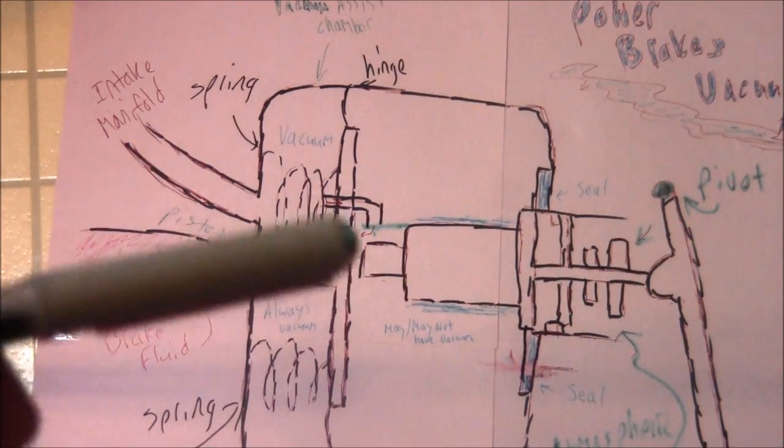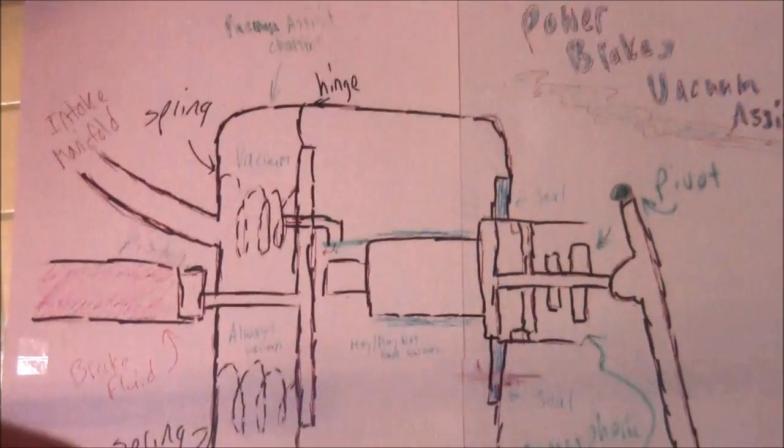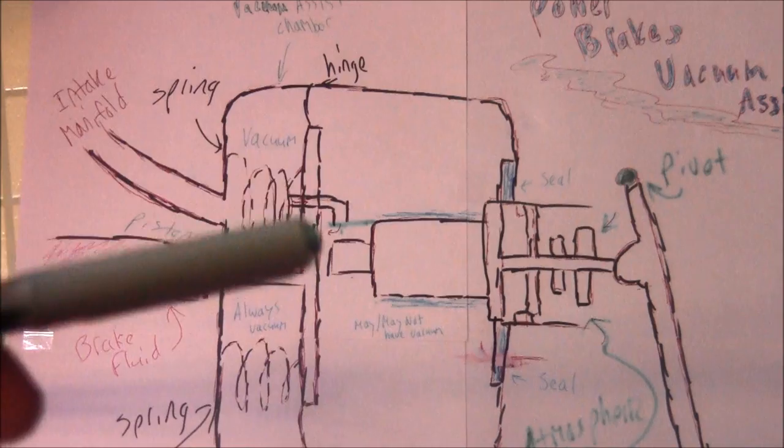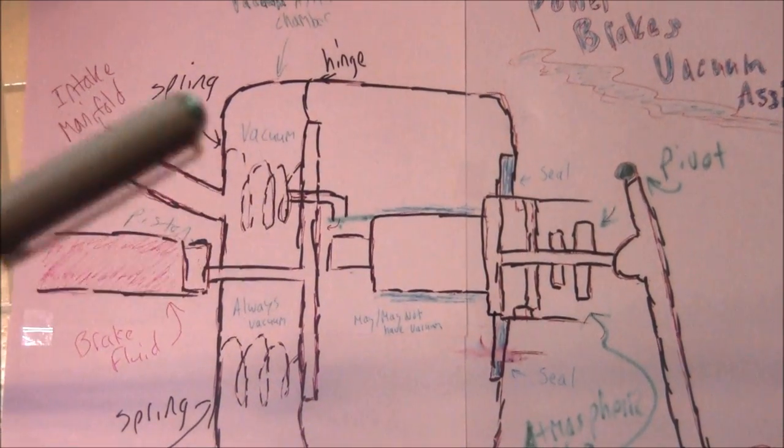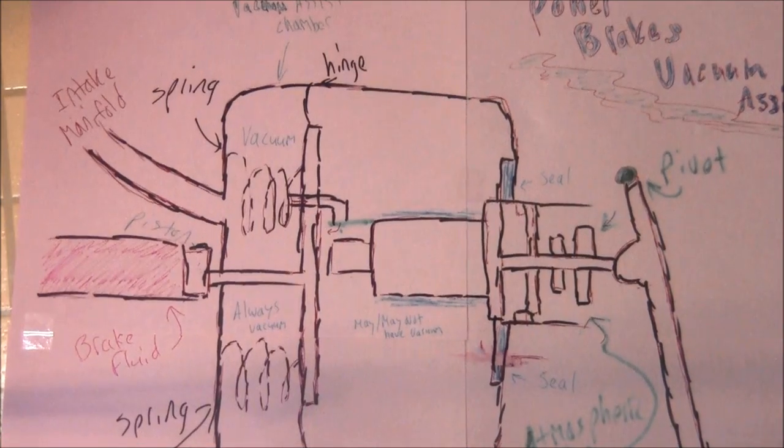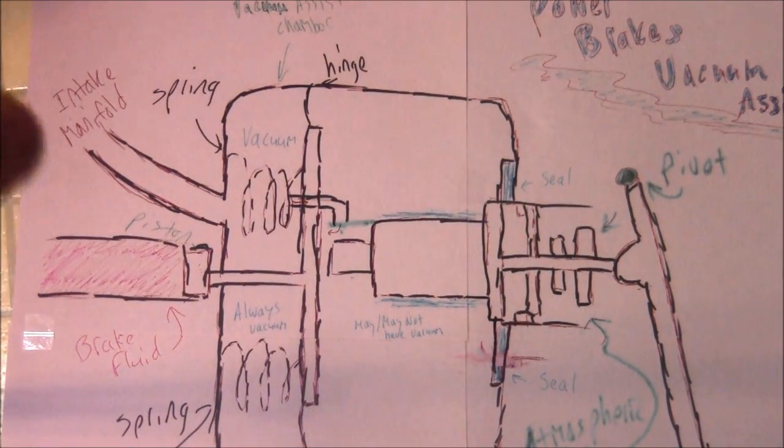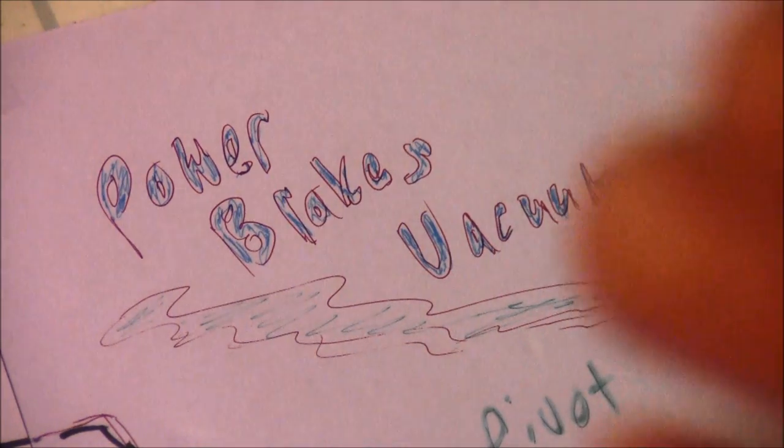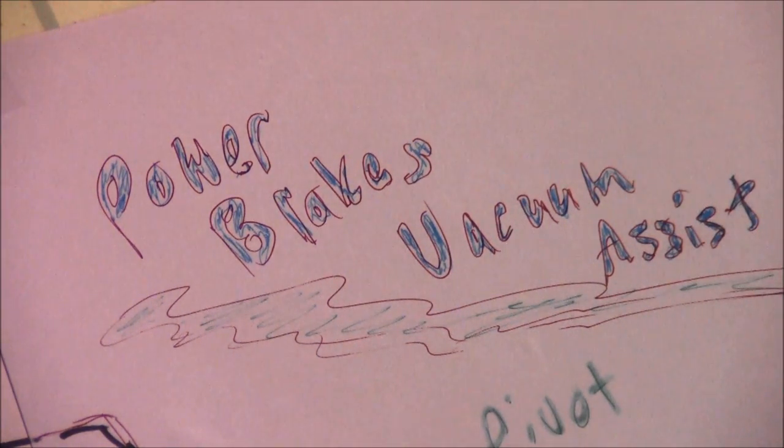So having vacuum-assisted brakes is really, really good and easier. The system is mounted right behind your brake fluid in your car, like right behind the reservoir. It's usually like a circle-type disc looking. It's all about creating a pressure differential.